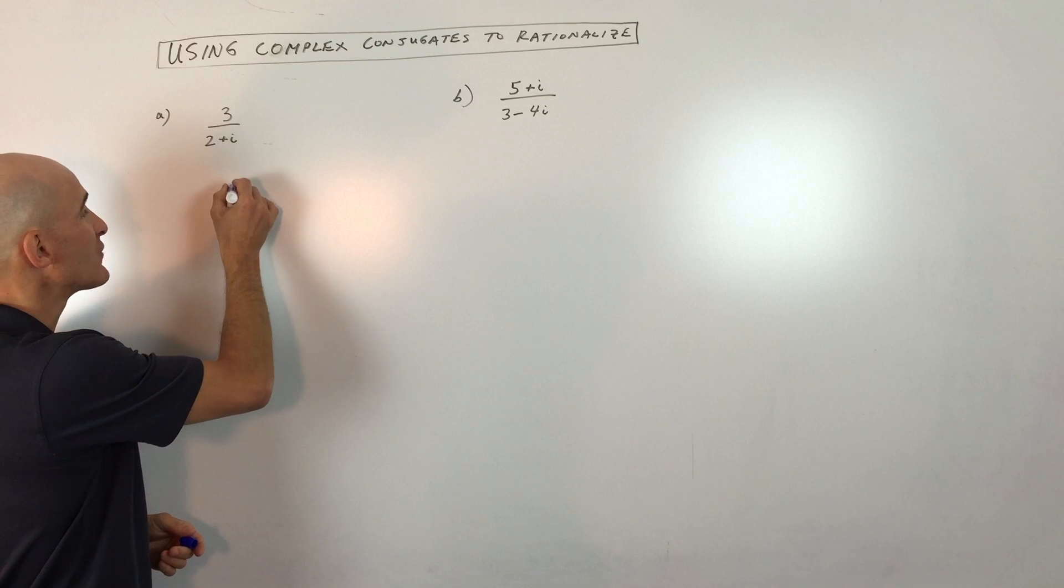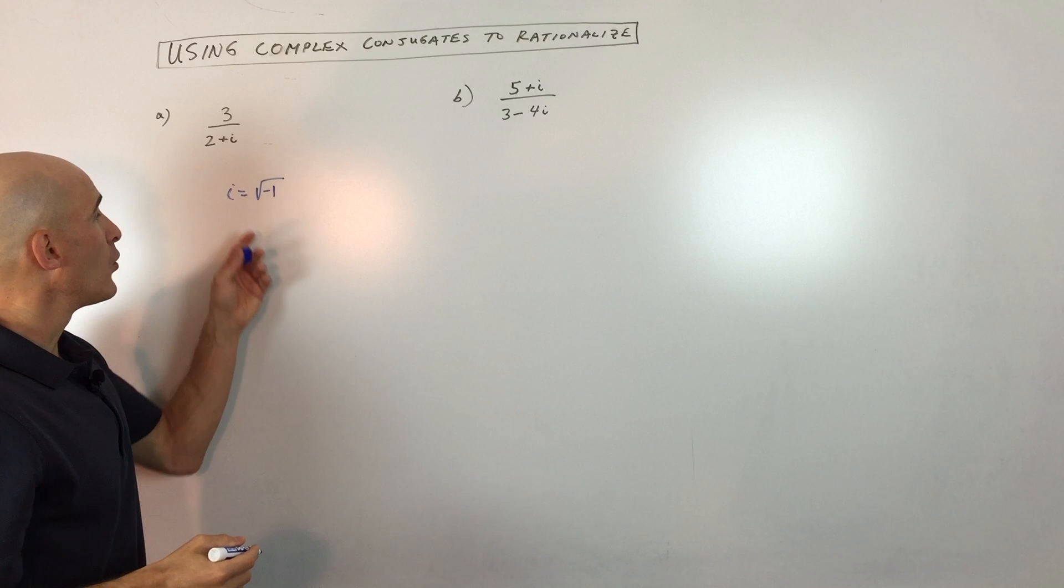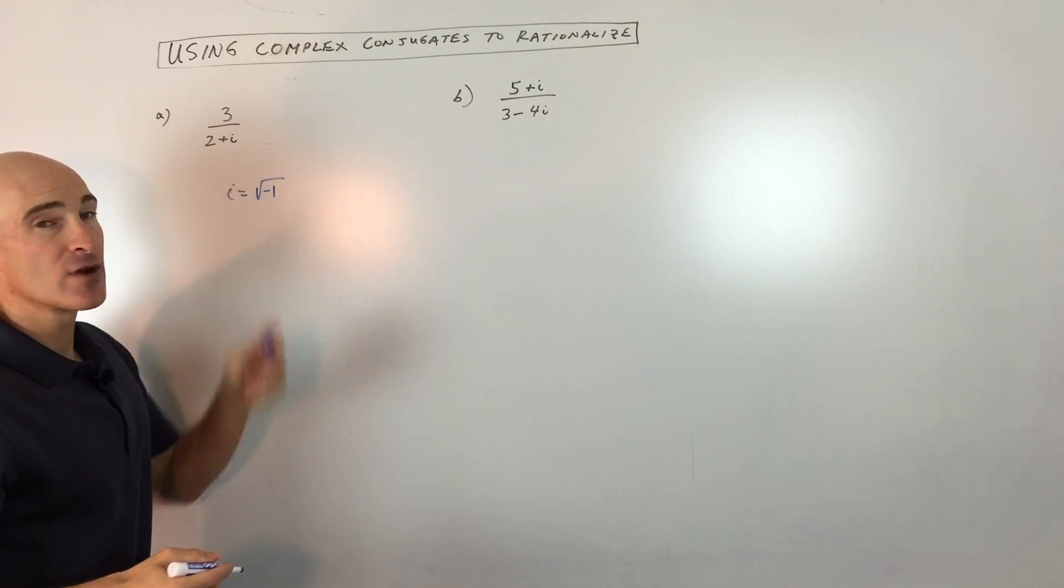Just to refresh, if you don't remember already, the i represents the square root of negative one. So we don't want that i in the denominator. How do we get rid of it?